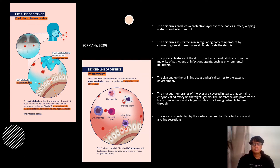Additionally, lysozymes, which are found in tears, perspiration, and saliva, function as a critical antibacterial agent that kills germs. The digestive tract contains gastric acid, pancreatic enzymes, bile, and intestinal secretions. The system is protected by the gastrointestinal tract's potent acidic and alkaline secretions.